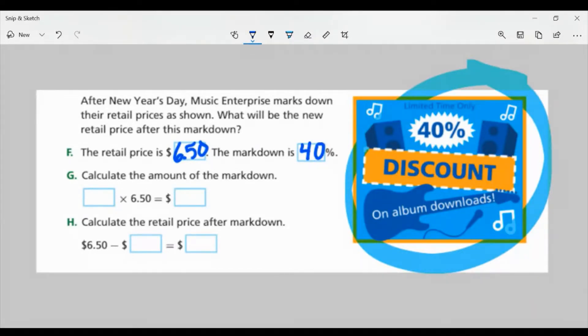And the markdown is 40%. So part G, calculate the amount of markdown. So I need to find 40% of $6.50. I'm dividing by 100 to get my decimal. So 0.4 times $6.50, and that would give me 2.6, which is $2.60. Now from here, we're going to subtract it from the retail price. So I'm going to take $6.50 and subtract $2.60, and we have the new discounted price at $3.90.